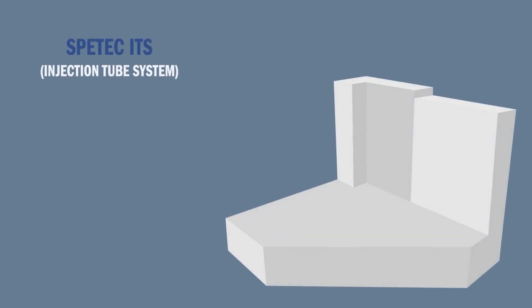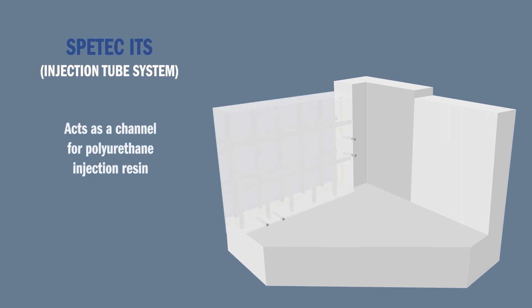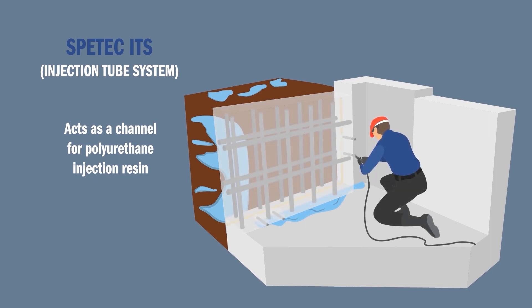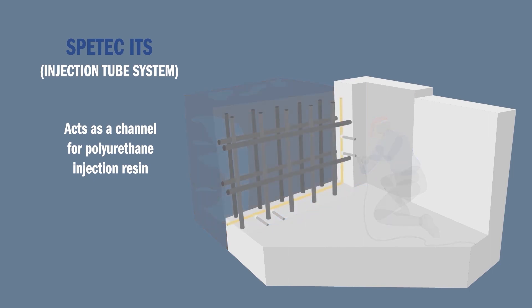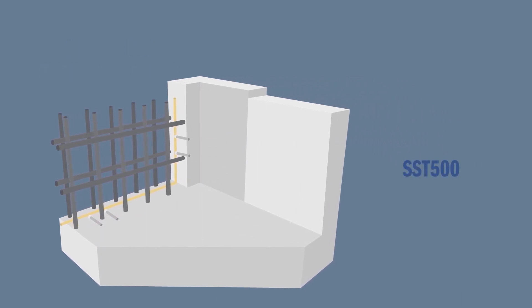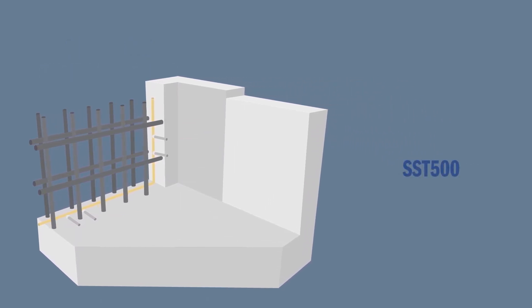Alchemy SpeedTech's ITS or Injection Tube System simplifies the injection of construction joints with polyurethane resin. The tube system is placed in the middle of the joint between the two sets of rebar during construction. Should leaks occur after construction, it acts as a channel for the polyurethane injection resin. It can be combined with other preventative waterproofing systems like the SST500 or PVC water stops.